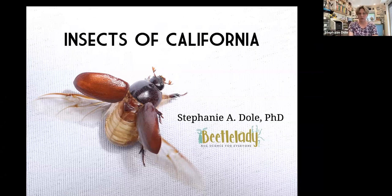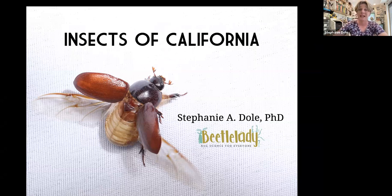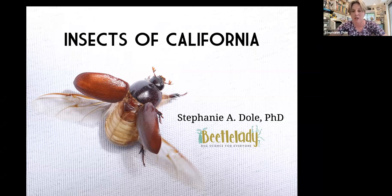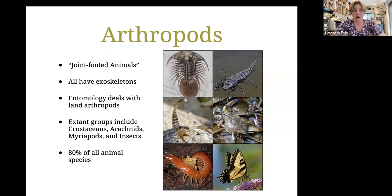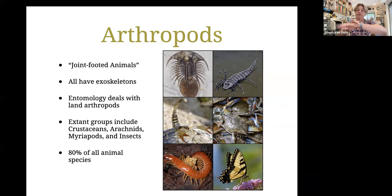Today we're here to talk about insects of California. We are incredibly lucky because we live in such a diverse state. California has an incredibly diverse series of ecosystems — different types of biomes and habitats like deserts, mountains, chaparral, ocean, and coast. Before we talk about what insects we have in California, let's do a quick review to be sure we're all on the same page. Insects are arthropods — animals with exoskeletons. The word Arthropoda literally means 'joint-footed.'